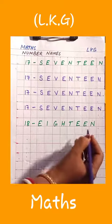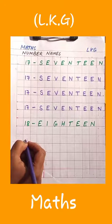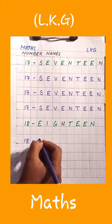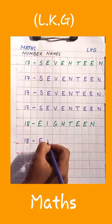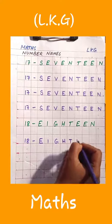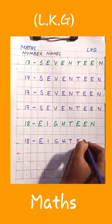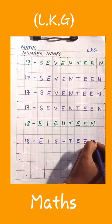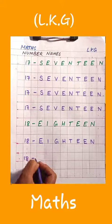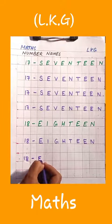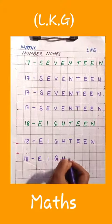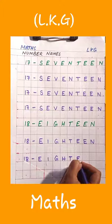Next is eighteen. You will write here 18, dash, spelling: E I G H T E E N. Eighteen.